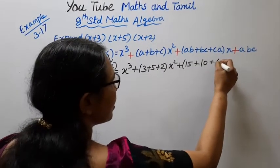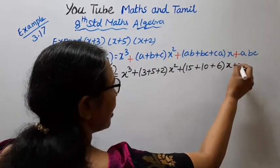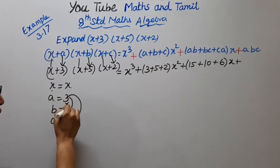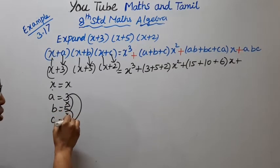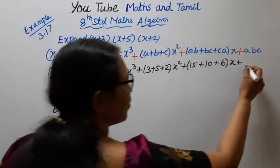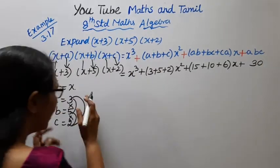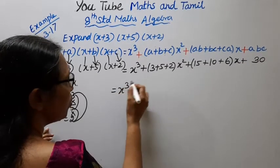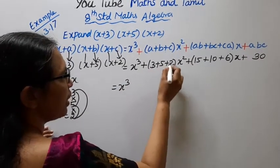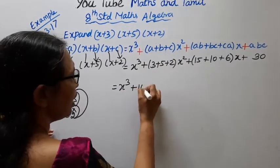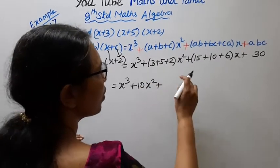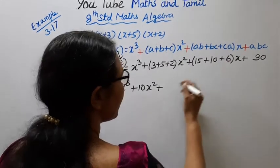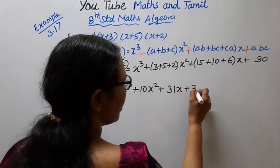That gives 31, into x. And abc equals 3 into 5 into 2: 3 into 5 is 15, 15 into 2 is 30. Also a plus b plus c: 3 plus 5 is 8, 8 plus 2 is 10. So the final answer is x-cubed plus 10x-squared plus 31x plus 30.